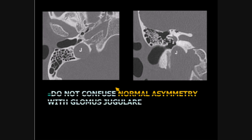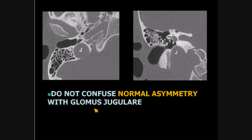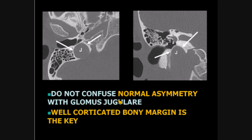This is another patient. Do not confuse the normal asymmetry with the glomus jugulari. The key is the well-corticated bony margin.